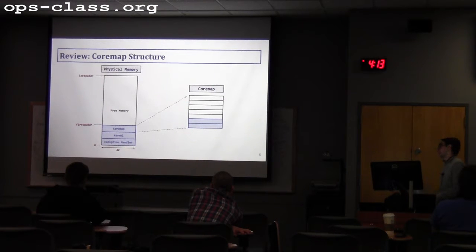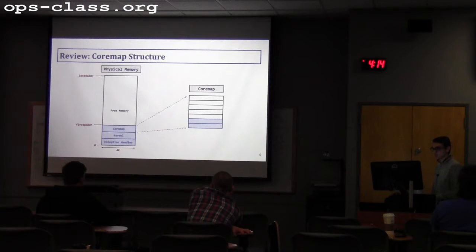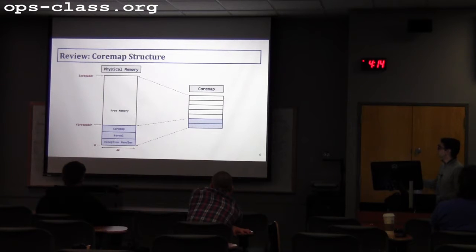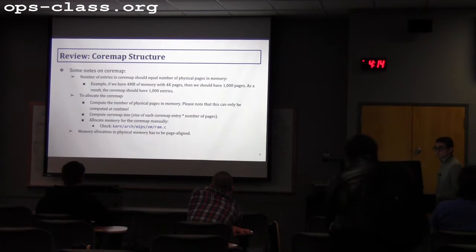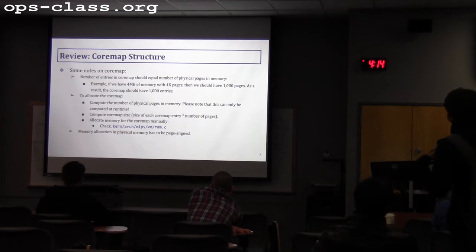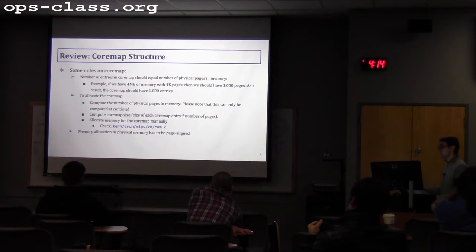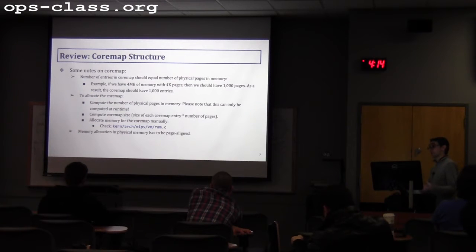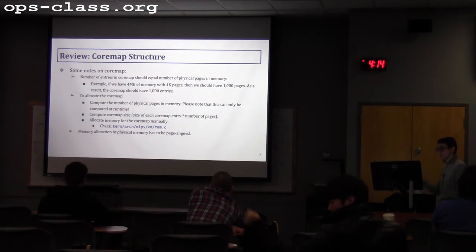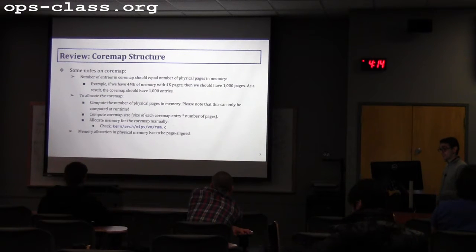The core map structure should have entries equal to the number of pages in physical memory. For example, the first three entries should be reserved for the exception handler, kernel, and core map, and the remaining should be free memory the user can use. The number of physical pages in memory is fixed, but not known at compile time — the RAM size must be retrieved at runtime. That means you need to initialize your core map later on; it shouldn't be a fixed size at compile time.